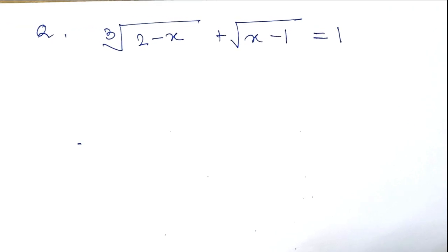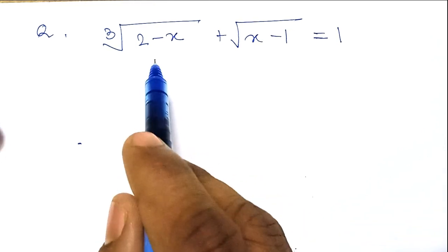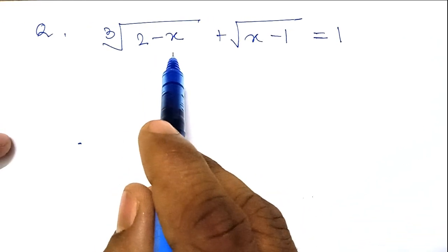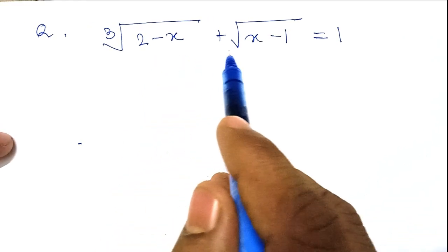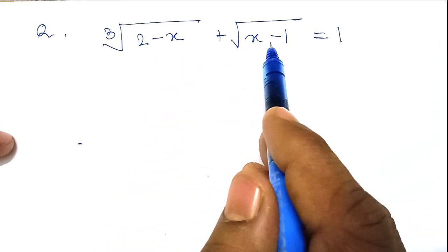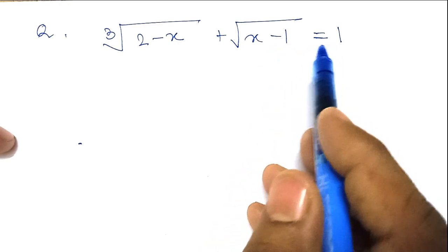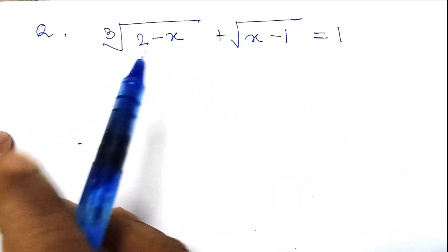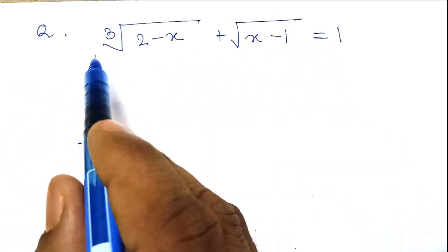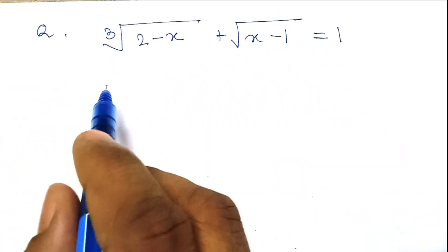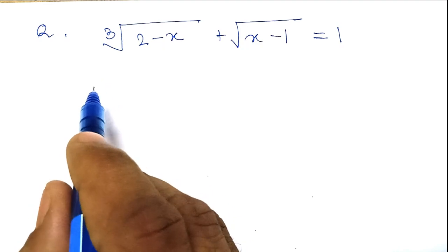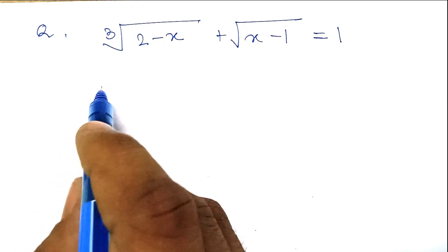Welcome to today's maths class. Today our problem is: cube root of (2 minus x) plus square root of (x minus 1) is equal to 1. This is a very good question for maths olympiad and we will see step by step how to solve this.